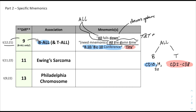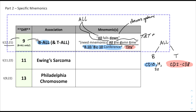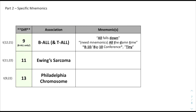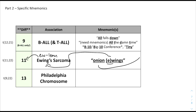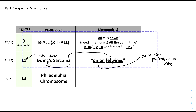Remember that only B-ALL is associated with the t(12;21) chromosomal translocation. For Ewing's sarcoma, similar to using 'Ew-11' to match it to number 11, we can think of 'onion, Ewing's' — onion for the classic presentation of onion skin periosteum on X-ray. And 22 minus 11 equals 11.